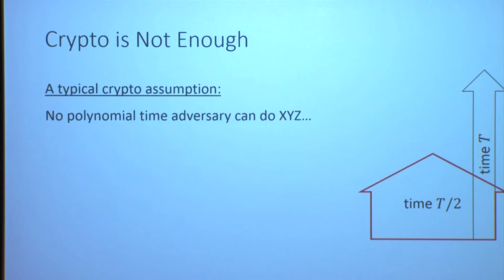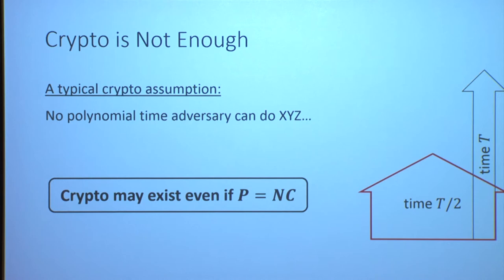Another way to see this barrier: imagine a world where every efficient computation can actually be parallelized — in complexity theory terms, P equals NC. This world seems unlikely but, as far as we know, it's not impossible. In this world, all of our cryptography that we know and love can still exist; but because every computation can be parallelized, inherently sequential functions are clearly impossible.